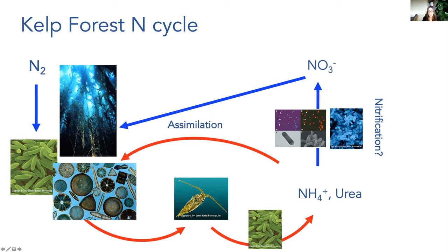Those primary producers are eaten by various consumers, which excrete ammonium — we'll hear about that from Joey later. You'll also hear more about urea. Even though urea isn't the primary nitrogenous waste product of most aquatic organisms, they still excrete urea as the breakdown product of various metabolic intermediates. We don't think microbial nitrification is that important in kelp forests, but honestly, I don't think anyone's ever actually measured it. Nitrate is a really important form of nitrogen delivered by upwelling, and both ammonium and nitrate can be assimilated by primary producers to fuel their growth.